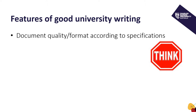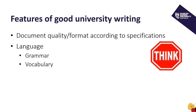How does your list compare to ours? One feature of good university writing is the quality of the document itself, which includes thinking about aspects such as margins, line spacing, font sizes and styles. Language is also an important consideration. Examples of language aspects the writer needs to consider include grammatical accuracy and variety, as well as vocabulary which is specialised and varied. In addition, university writing has a style which is generally described as formal and academic.